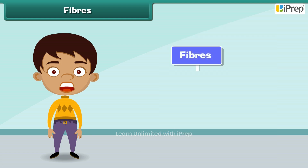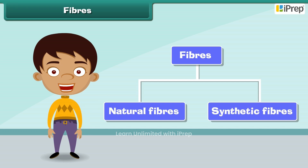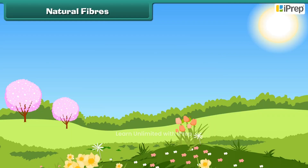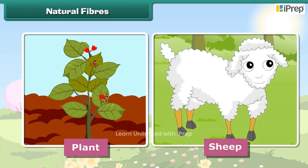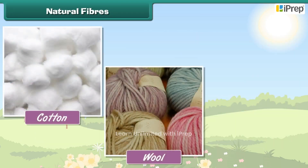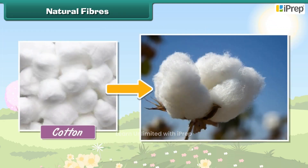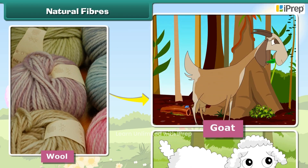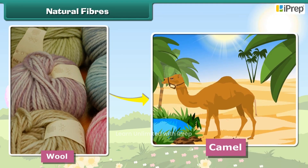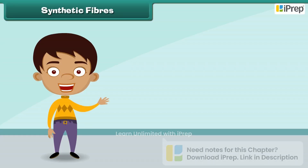Fibers are of two types: natural fibers and synthetic fibers. Natural fibers are made from plants and animals. Some natural fibers are cotton, wool and silk. Cotton is obtained from plants. Wool is obtained from sheep, goats and camels. Silk is obtained from silkworms.